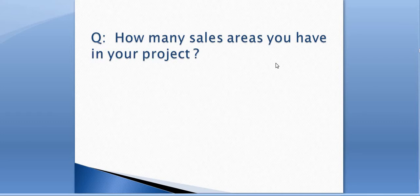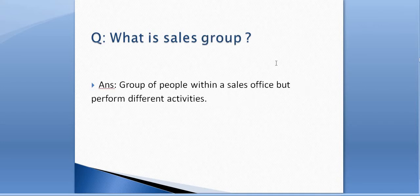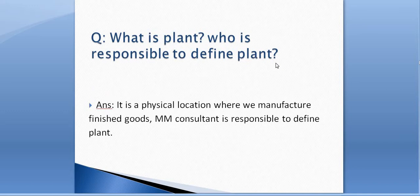What is a sales office? A sales office is a physical location where a group of people work together to perform sales activities — in simple words, it's a branch office. What is a sales group? A sales group is a group of people within a sales office who perform different activities.